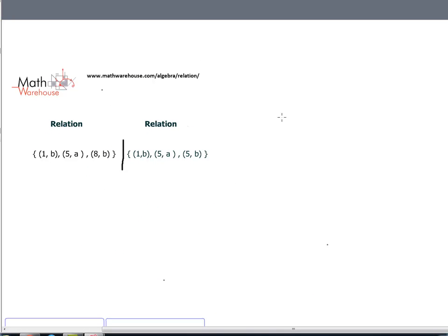Does each domain or x value have a unique y value in this? Well, we have an x of 1 or a domain of 1. It goes to b. Do you see any other ones on the domain? Nope. So far it looks pretty good. We have a domain or an x value of 5 that goes to a. Are there any other 5s? Nope. 8 goes to b. No, there are no other 8s.